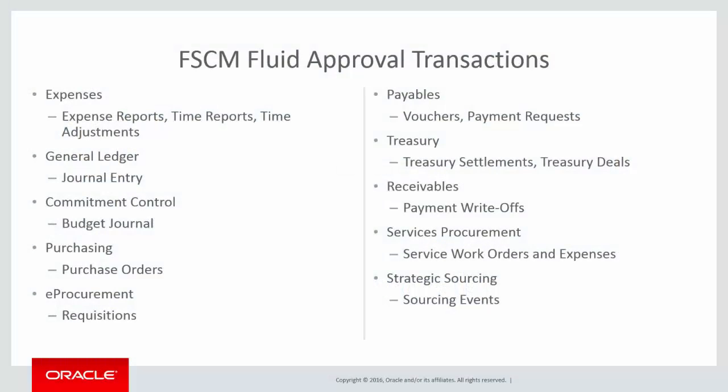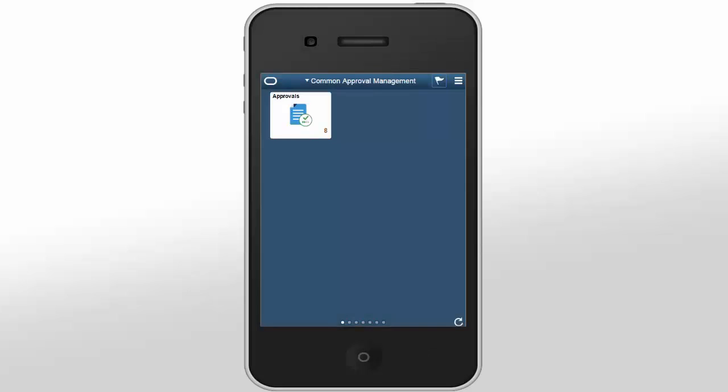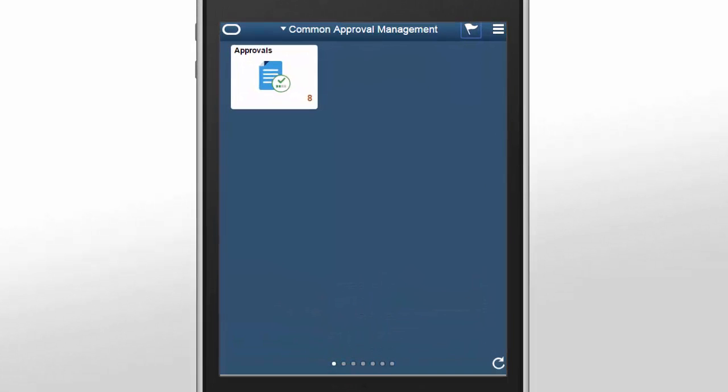PeopleSoft Financials and Supply Chain Management fluid approvals are being converted from using PeopleTools map technology to Enterprise Components fluid approvals. In Update Image 20, the products shown here are replacing the fluid approvals currently using map technology with new Enterprise Components fluid approvals. In addition to replacing the current functionality, some of the new fluid approvals have additional enhancements for customers to utilize. These approvals are designed for use on any device. Access all approvals with the Approvals tile on your FSCM homepage.